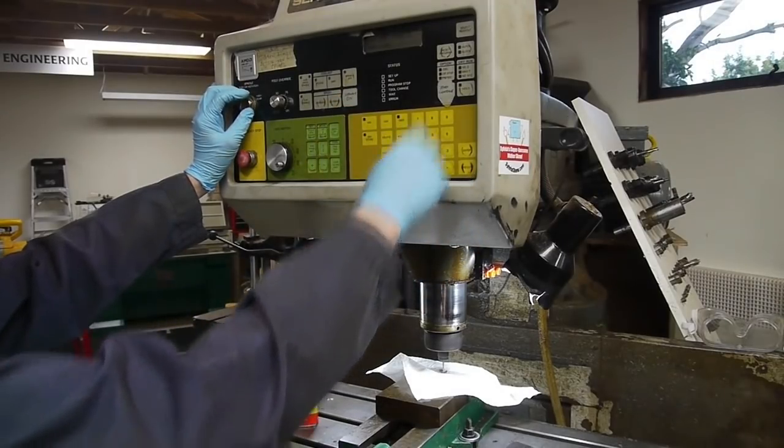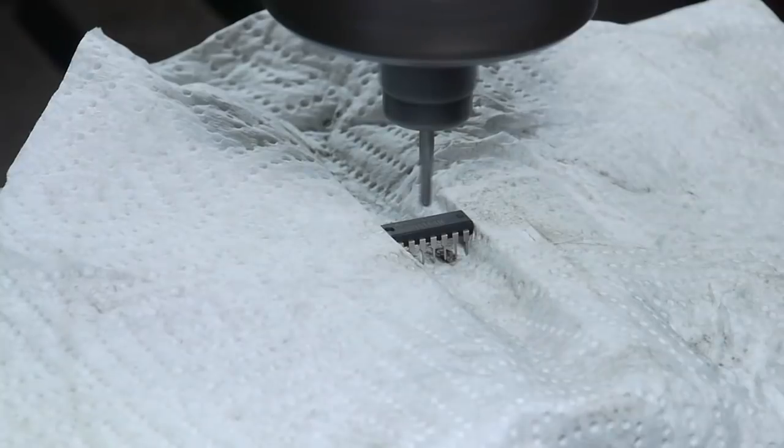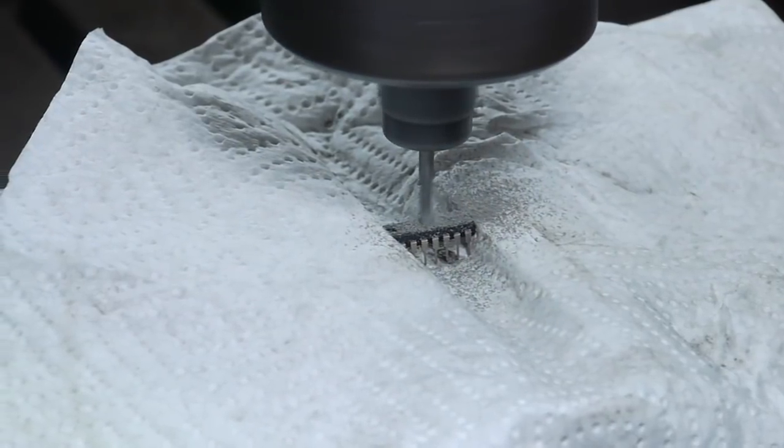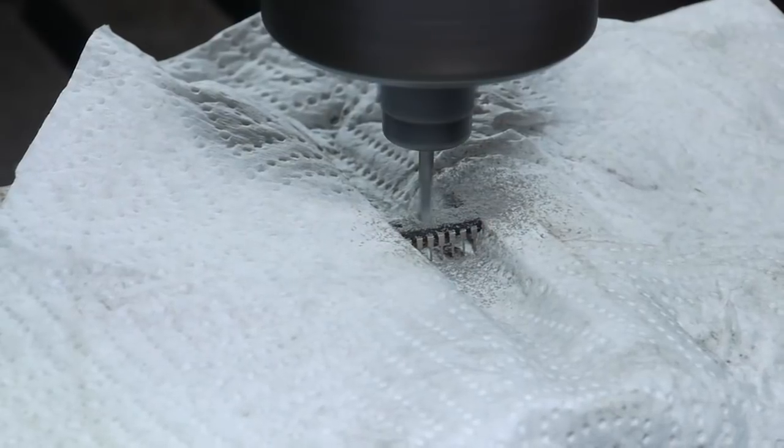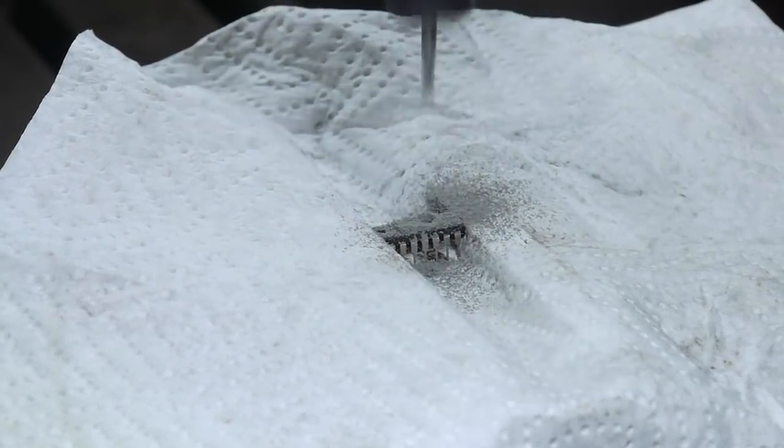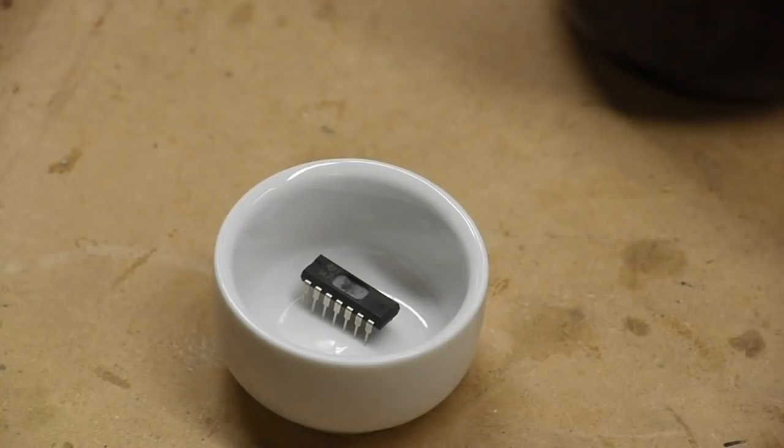So I had a really nice, even, consistent depth pocket. And for these chips, I've been de-capping just 74 series logic and 4000 series logic, all 14 and 16 pin DIP packages. And the thickness that I've been removing is about 40 to 50 thousandths from the top of the package.